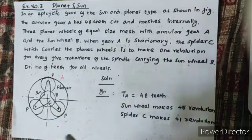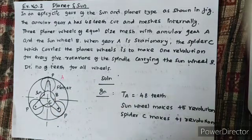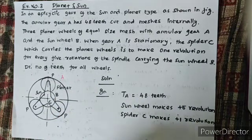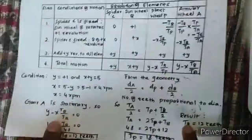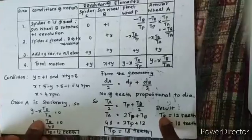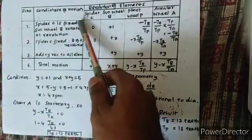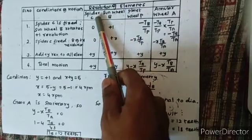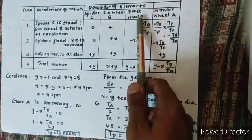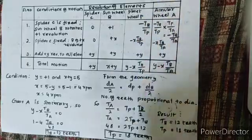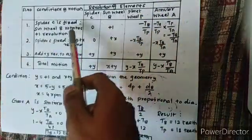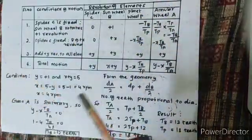Next, the tabular column: first serial number, condition of motion, revolution of elements - spider C, sun wheel B, planet wheel P, and annular wheel A. First condition is spider is fixed, this arm is fixed.